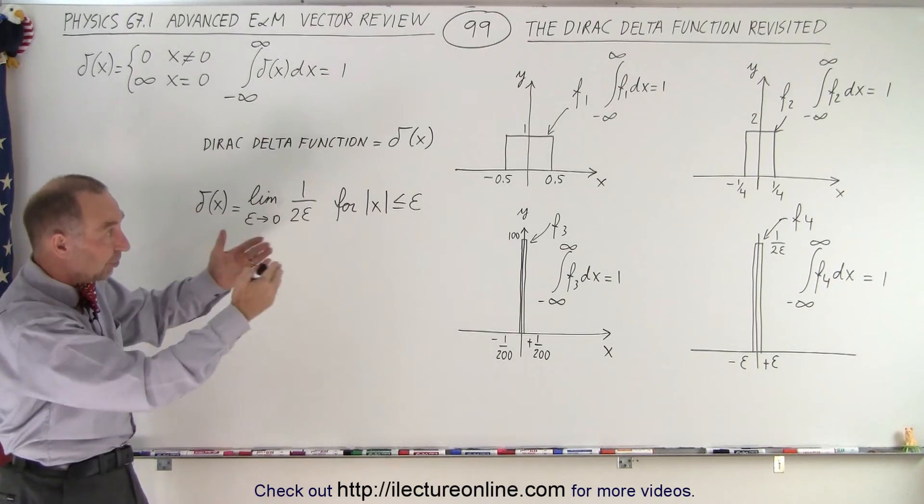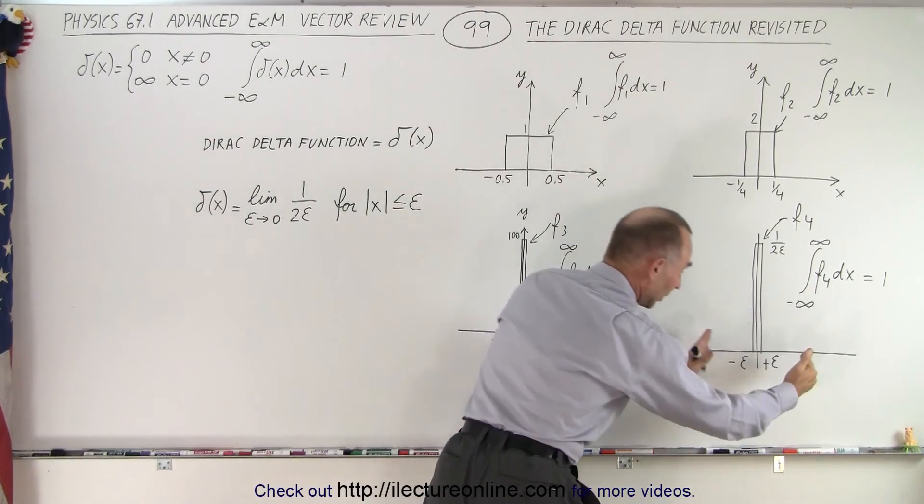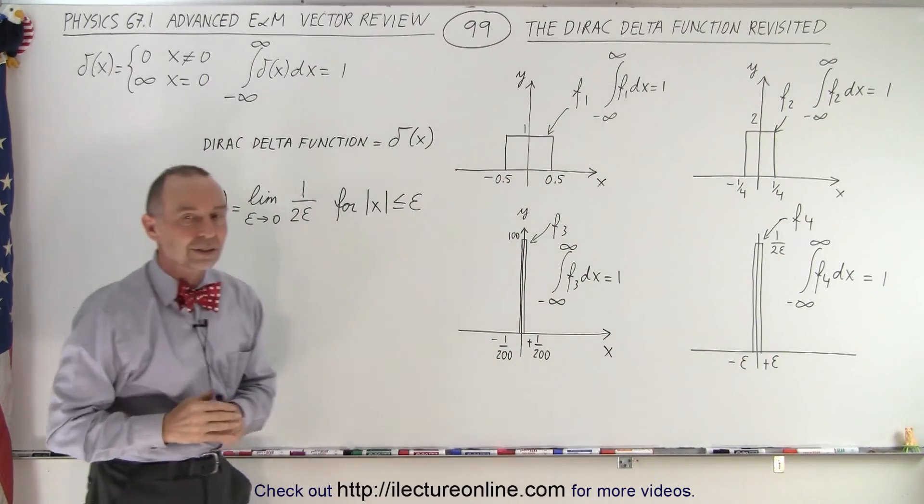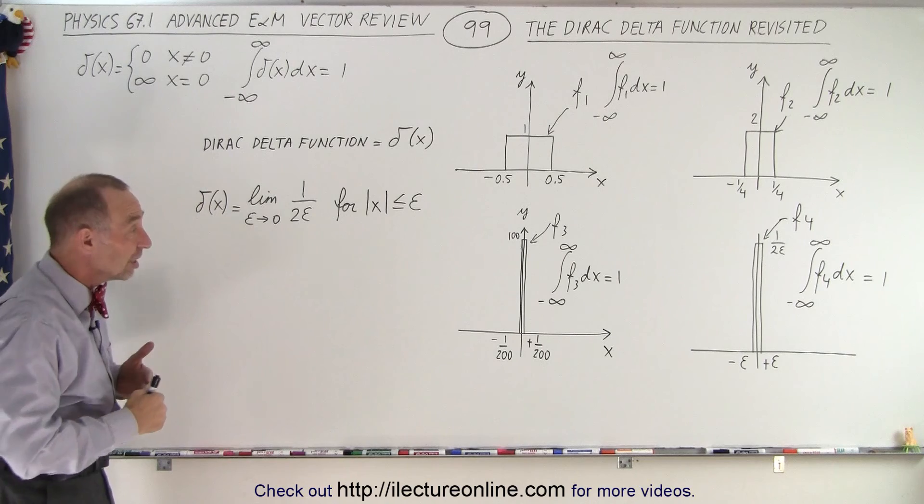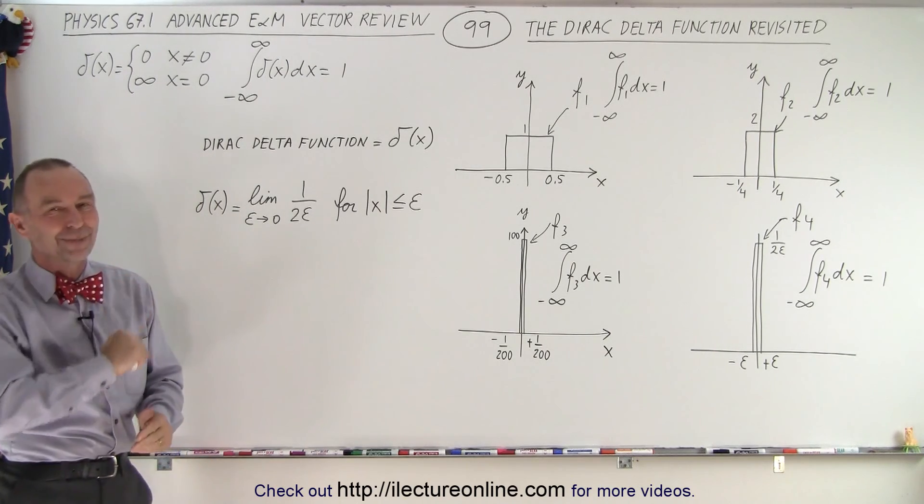Hopefully, when you follow that, when you go from here to there to there to there, and ultimately, you let the width go to 0, height becomes infinite. That is what the Dirac delta function is in the limit when epsilon goes to 0. And that is how it's done.